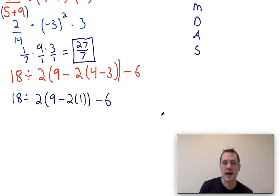Now we think, okay, well we have to deal with what's inside of these parentheses. Well when we're dealing with what's inside the parentheses, we first multiply because we can multiply this 2 times this 1, and then we subtract. So we would do 9 minus 2 inside of that set of parentheses. So we're going to have 18 divided by 2 times 7 minus 6.